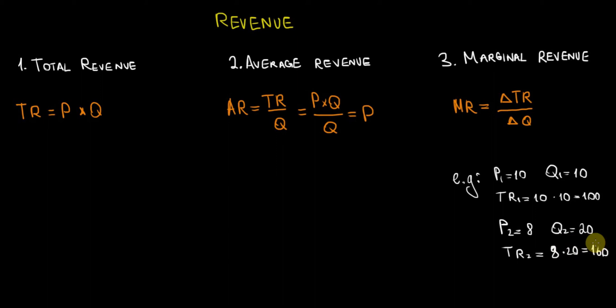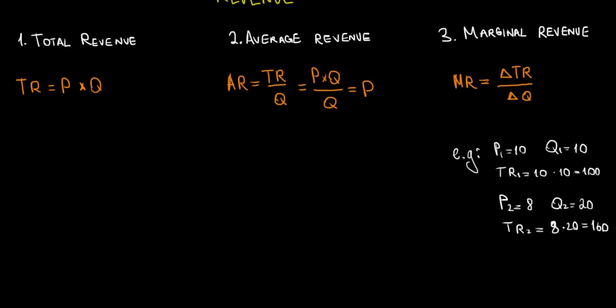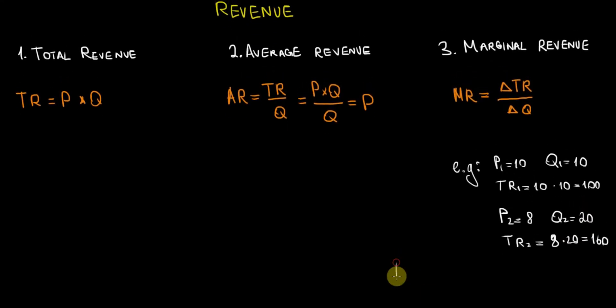Now the question is, what is the marginal revenue? I'm computing it right now. Let me make some space. The marginal revenue is the change in total revenue, which is the difference between the second revenue and the first one, divided by the change in quantity, which is the difference between the quantity after the price changed and the initial quantity that the company was selling.